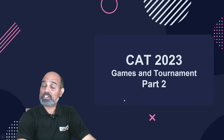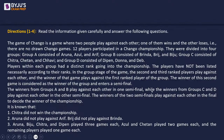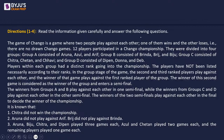Let's begin with today's first set. The game of Chango is a game where two people play against each other — one wins and the other loses; there are no drawn Chango games. Twelve players participated in a Chango championship, divided into four groups. Group A: Aruna, Azul, Arif. Group B: Brinda, Bridge, Biju. Group C: Chitra, Chetan, Chavi. Group D: Dipen, Drona, Deb. Players within each group have a distinct rank going into the championship. In the group stage, the second and third ranked players play against each other, and the winner plays against the first ranked player of the group.